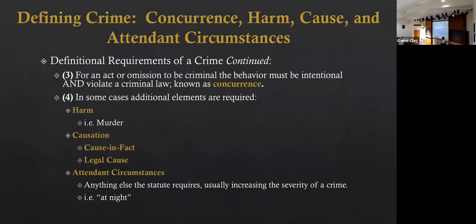Last class, we ended talking about harm, causation, and attendant circumstances. Harm is required in some crimes, such as murder, but not all charges. In most crimes, all you have to prove is the mens rea and the actus reus. Causation is usually inferred, but you do have to prove cause in fact and legal cause.